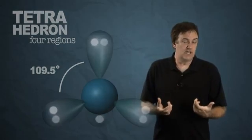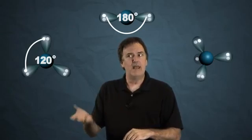As you can see, the bond angles are getting smaller because we're bringing in more regions. We started at 180 for linear, 120 for trigonal planar, and now we're down to 109.5 for tetrahedral.